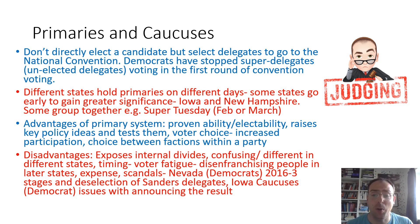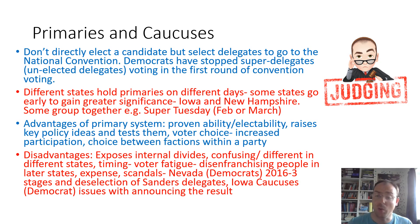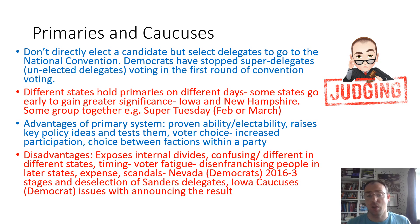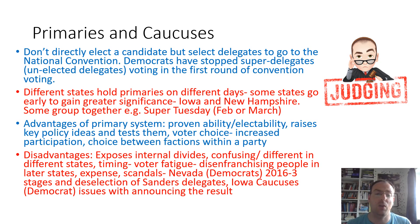Different states hold primaries on different days. Some states go early to gain greater significance — Iowa and New Hampshire, for example. Some are grouped together, such as Super Tuesday, which takes place in February or March and is the largest gathering of votes on the one day.